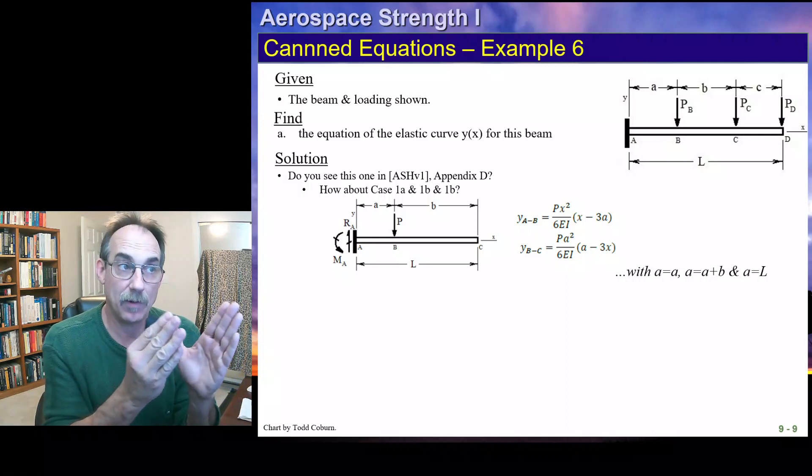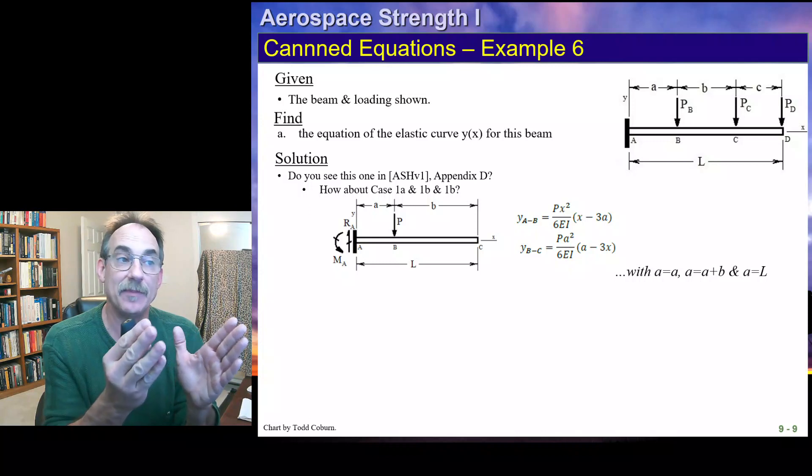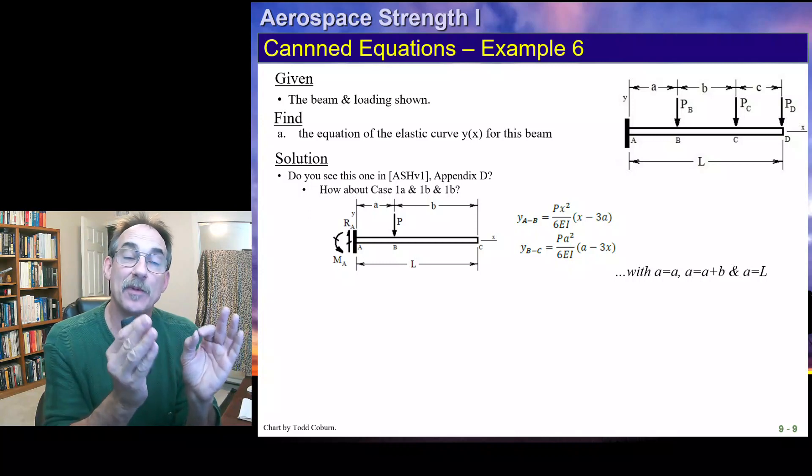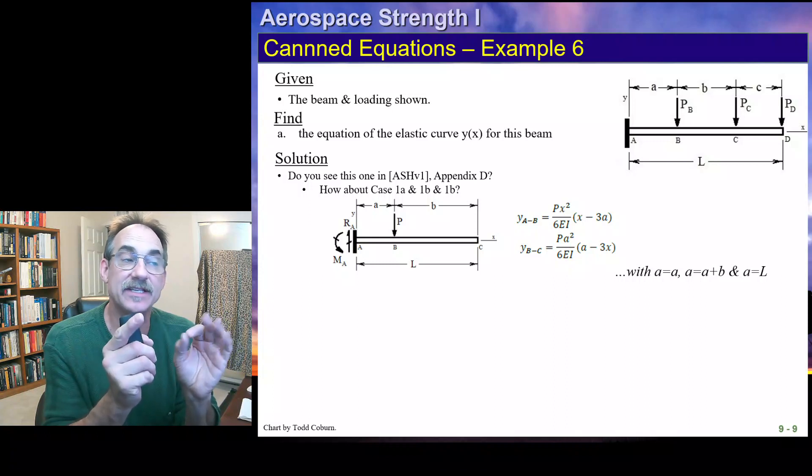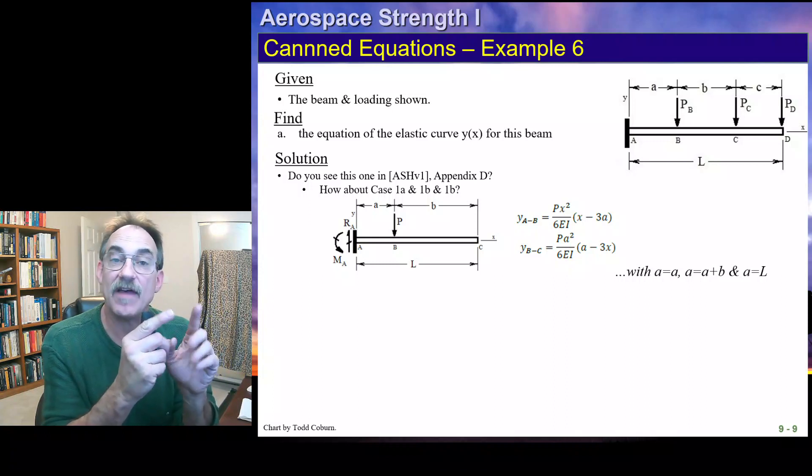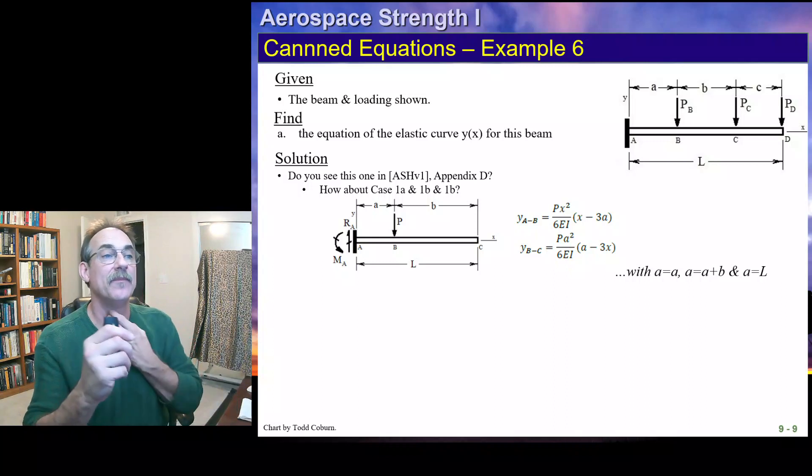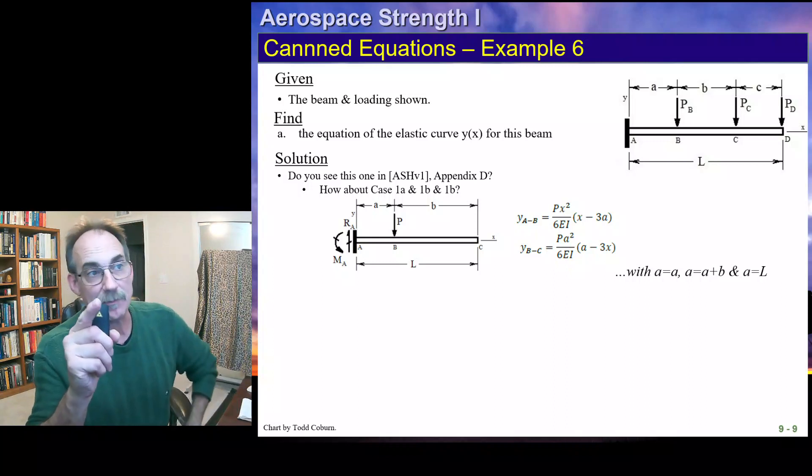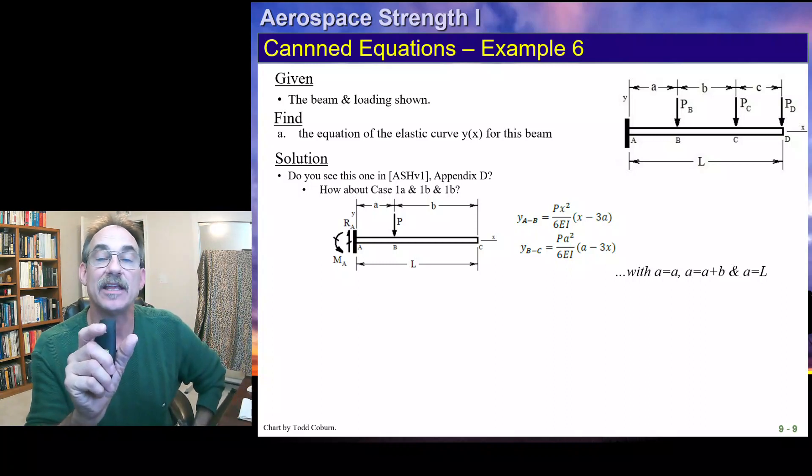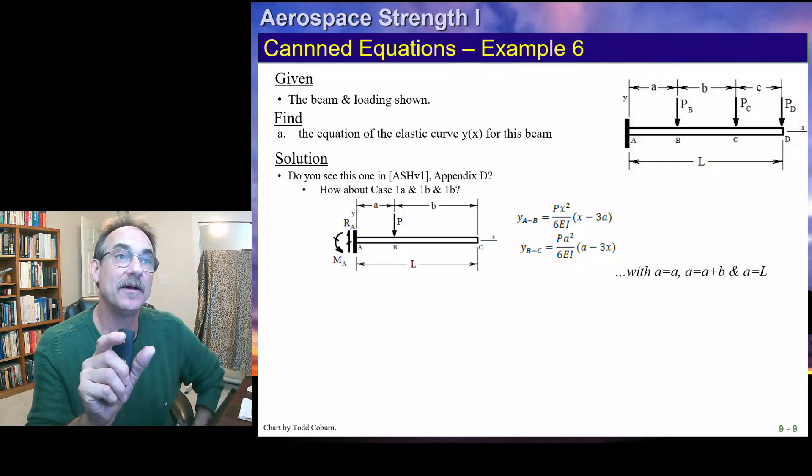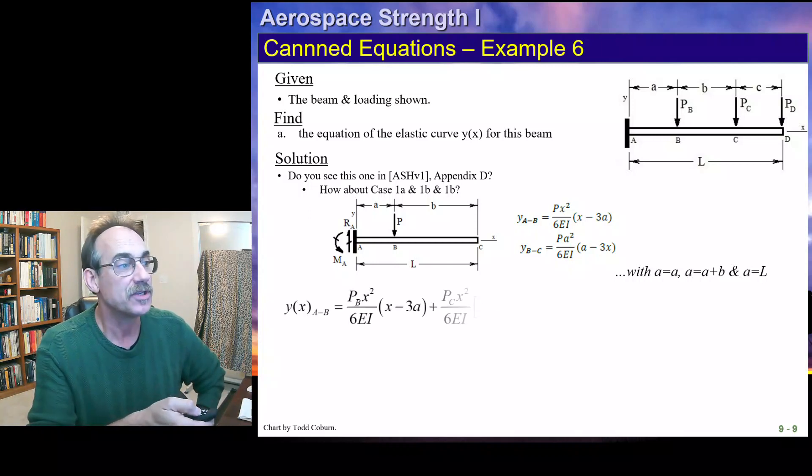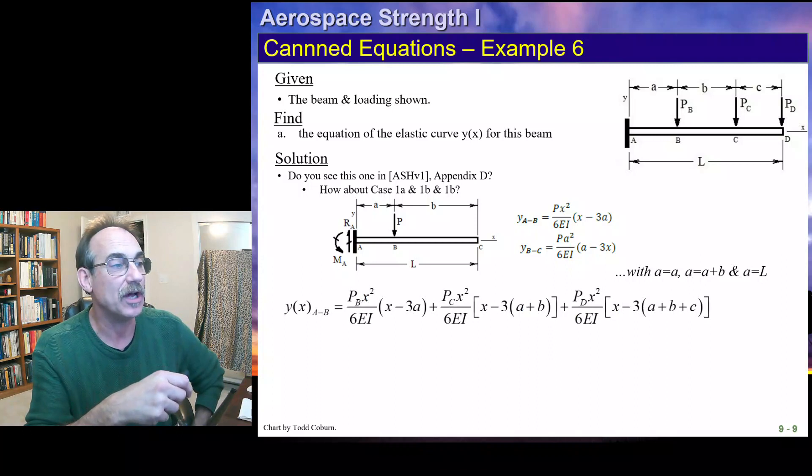So now that first function will be valid all the way from A to C, and the second function will be valid from C to D. Where A, though, in both of these relations is going to be A plus B. The third time we use it will be for P_D. And in that case, we're going to use that Y of A to B for the entire beam. Our force value will be P_D, and our A value will be A plus B plus C.